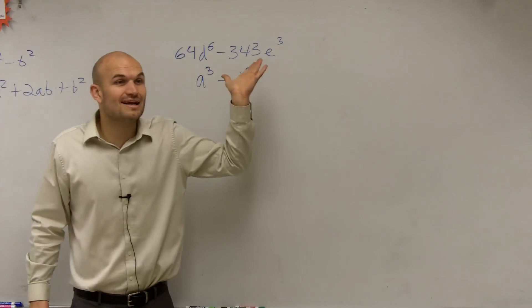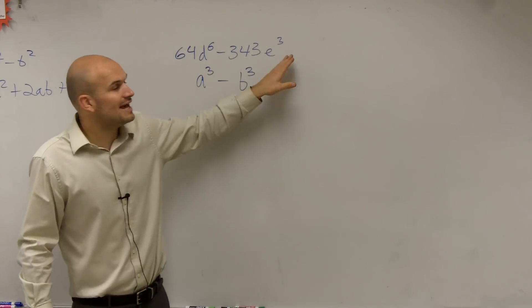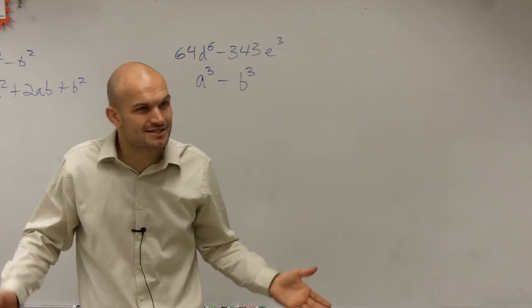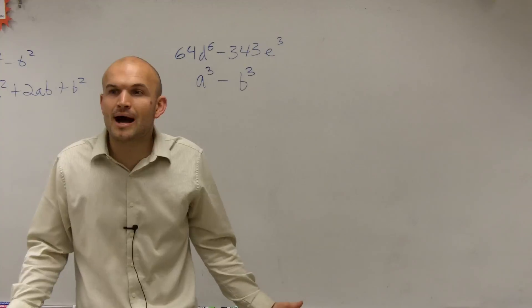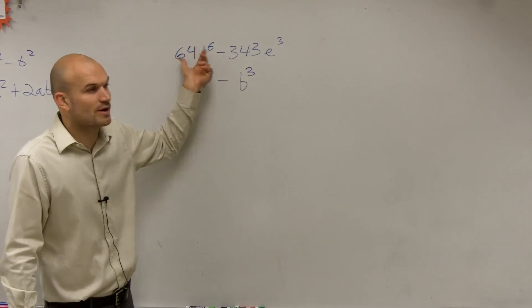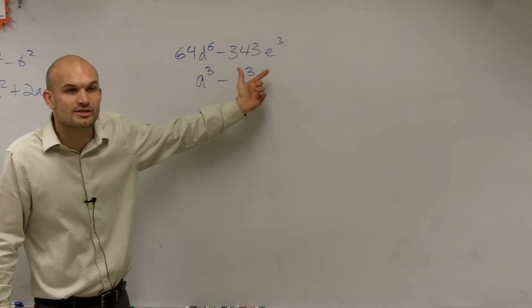So right now, squared, we can't write that. So we have a problem. And the same thing with e cubed, you can't write that as a squared term either. So we have a problem. This we can write as a squared, a difference of squares. But this one, we cannot write as a squared term.